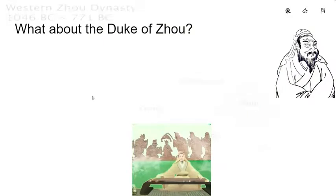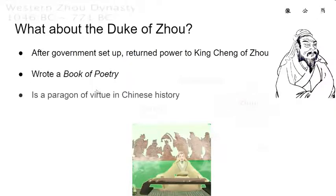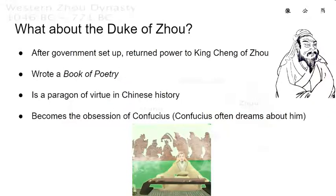But what about the Duke of Zhou? After the government was set up, he returned power to King Cheng. He essentially retired. He wrote a book of poetry and is a paragon of virtue in Chinese history because, instead of maintaining power and becoming a de facto king, he returned power to his nephew. That's what makes him a paragon of virtue. He becomes the obsession of Confucius — Confucius often dreams about the Duke of Zhou, and you could say the Duke of Zhou is the hero of Confucius, somebody Confucius admired.